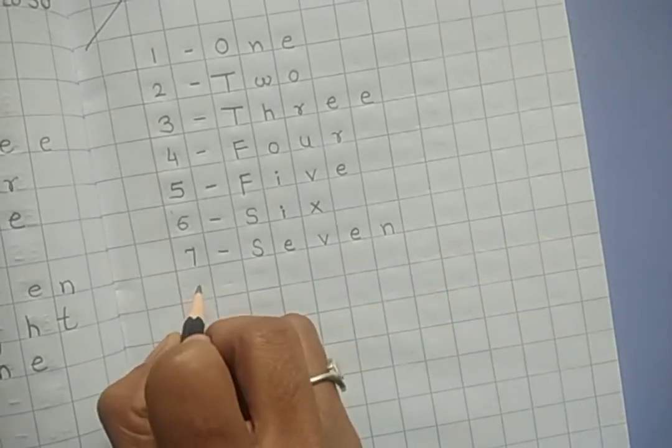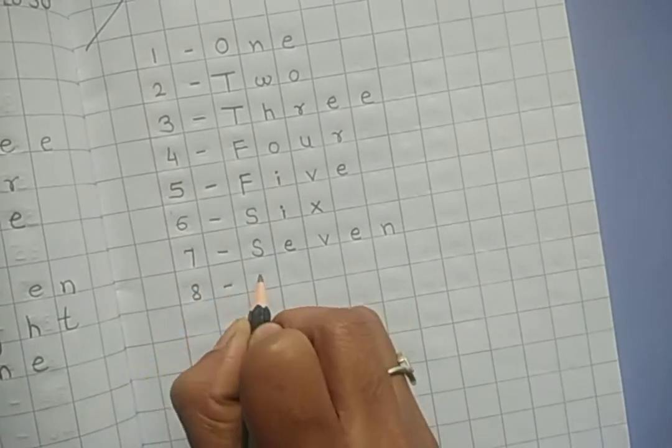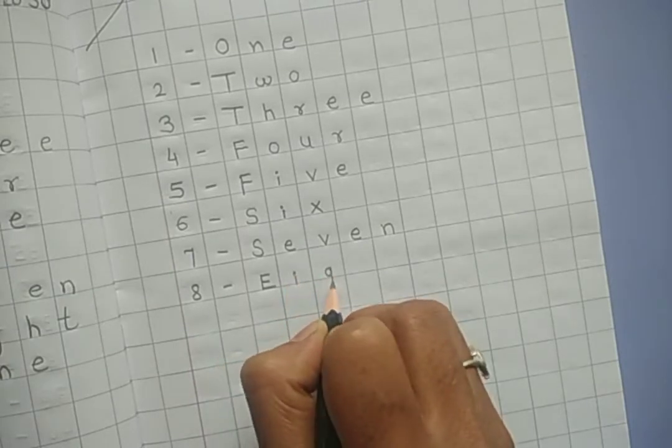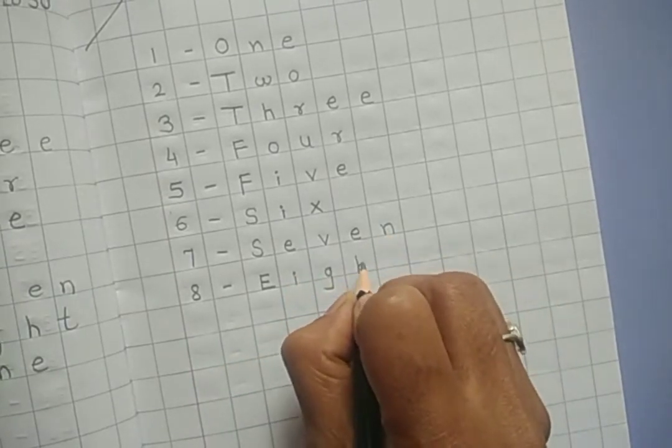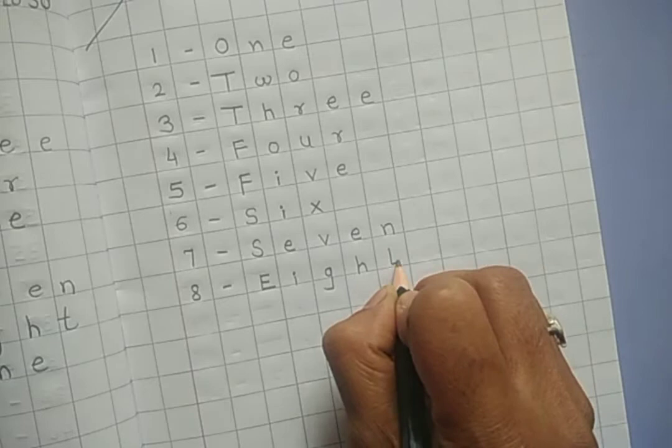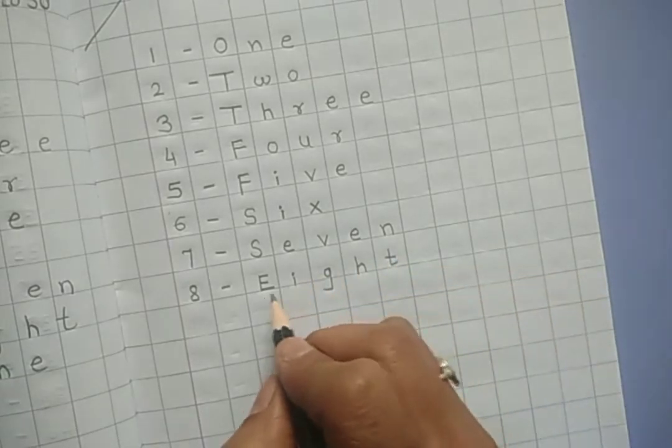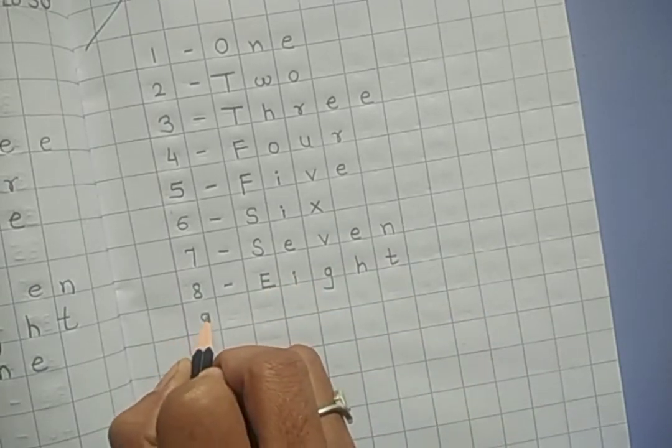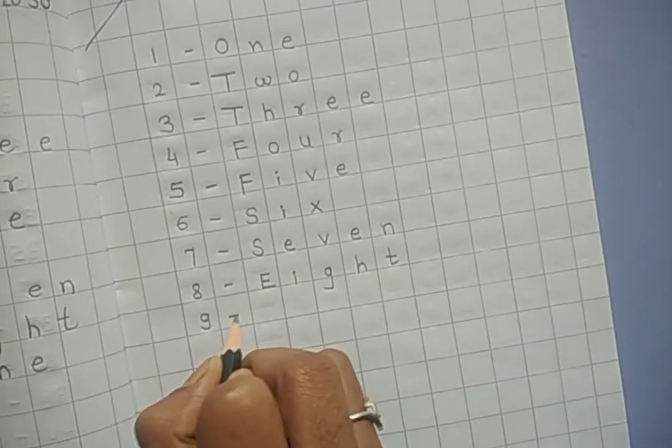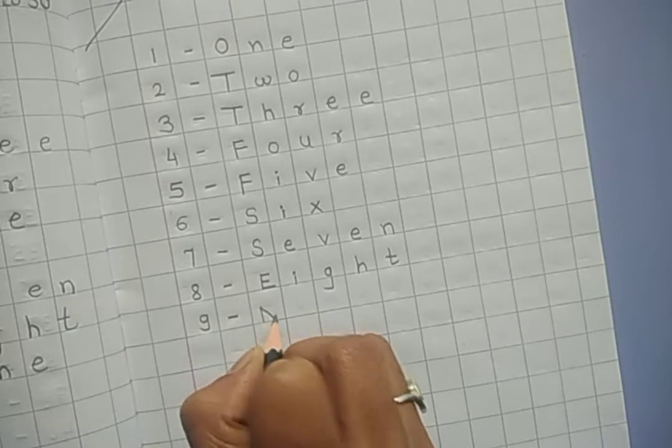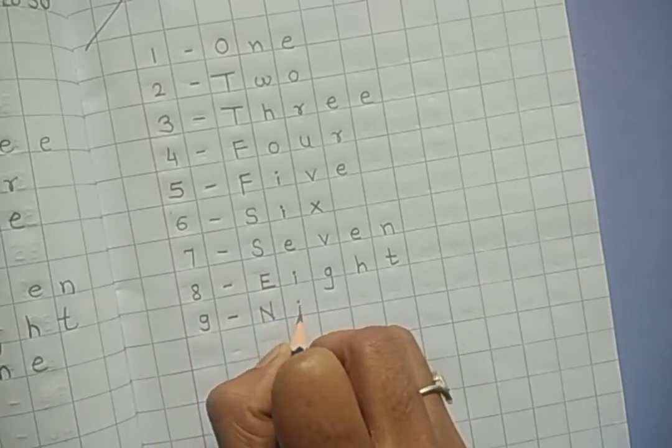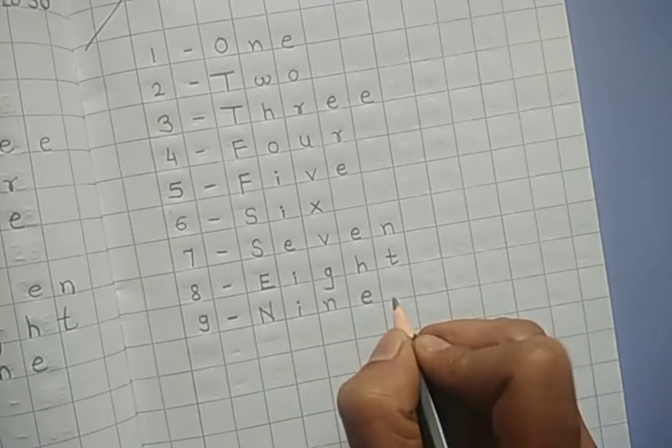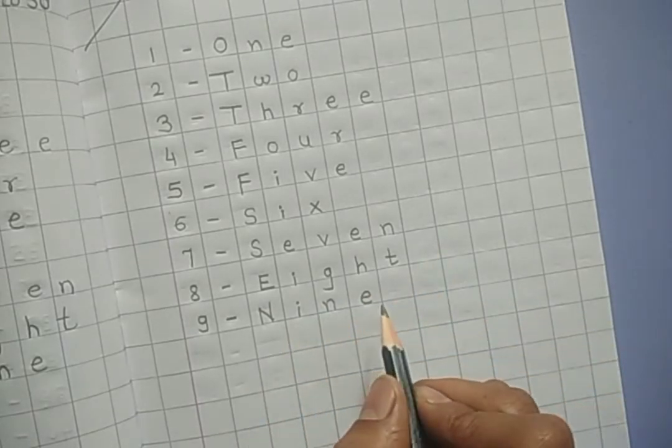Number 8, capital E, small I, small G, small H, small T, E-I-G-H-T, eight. Number 9 dash, capital N, small I, small N, small E, N-I-N-E, nine.